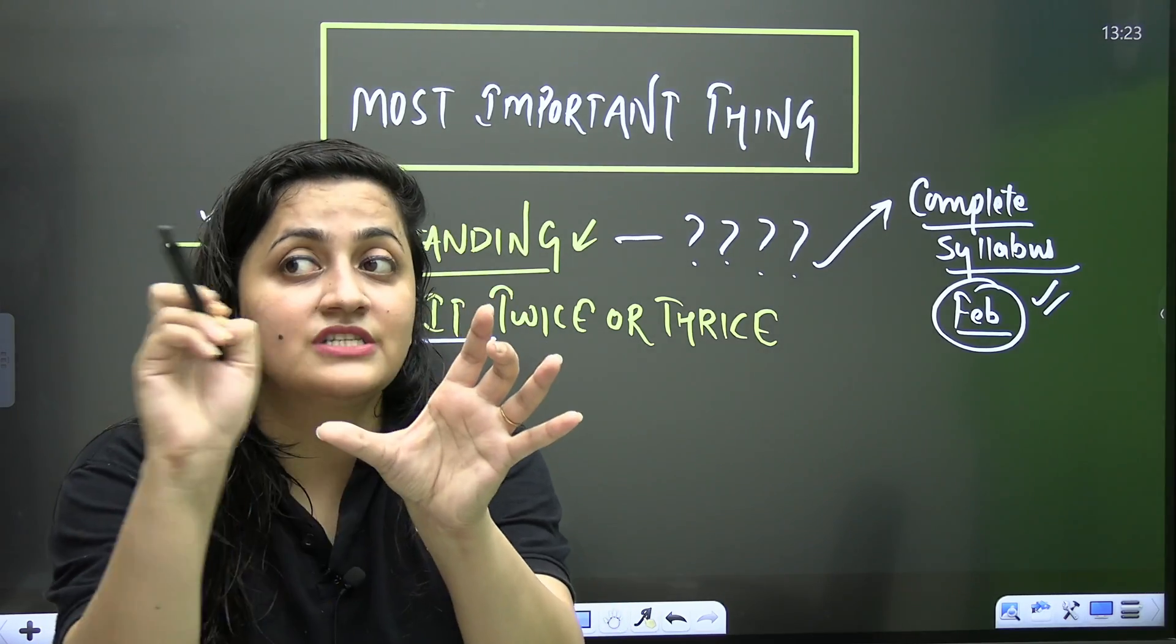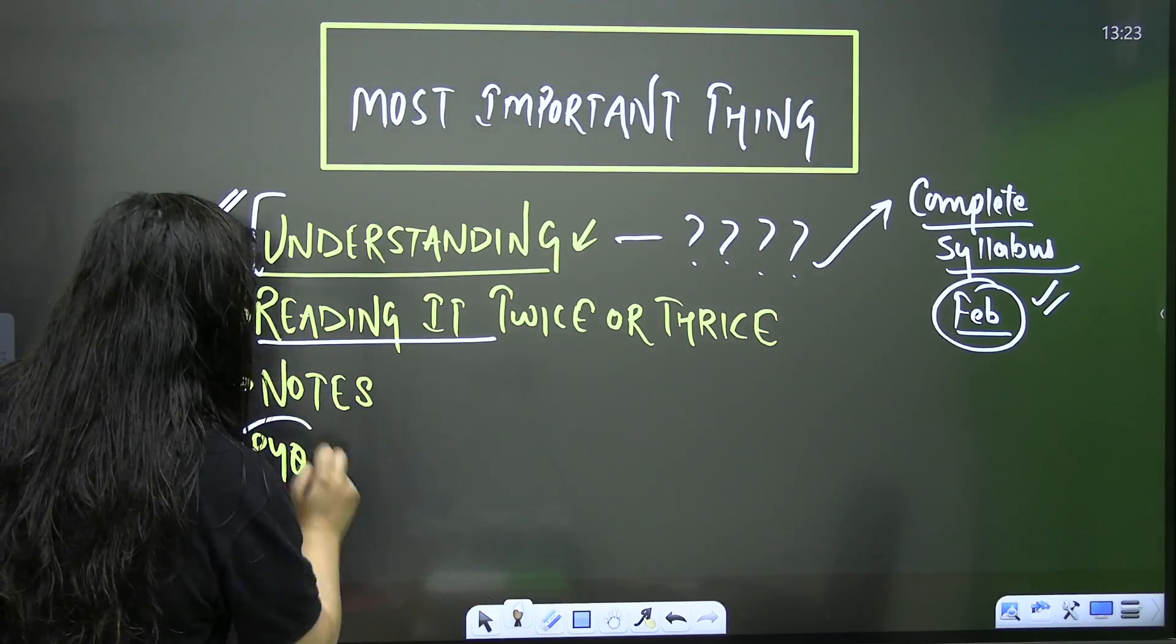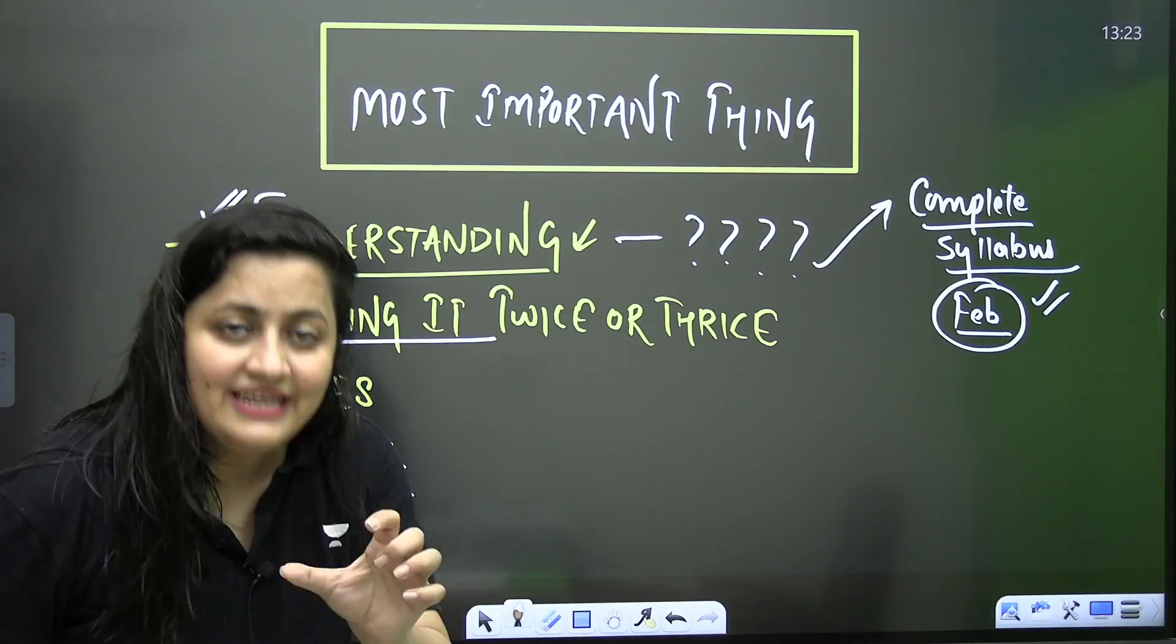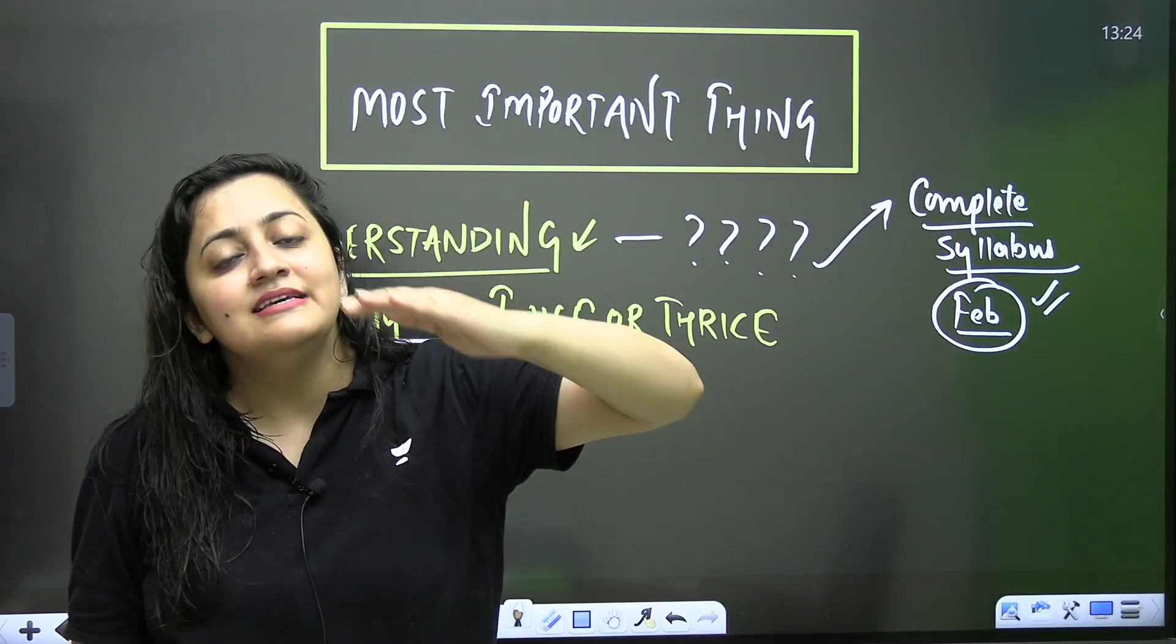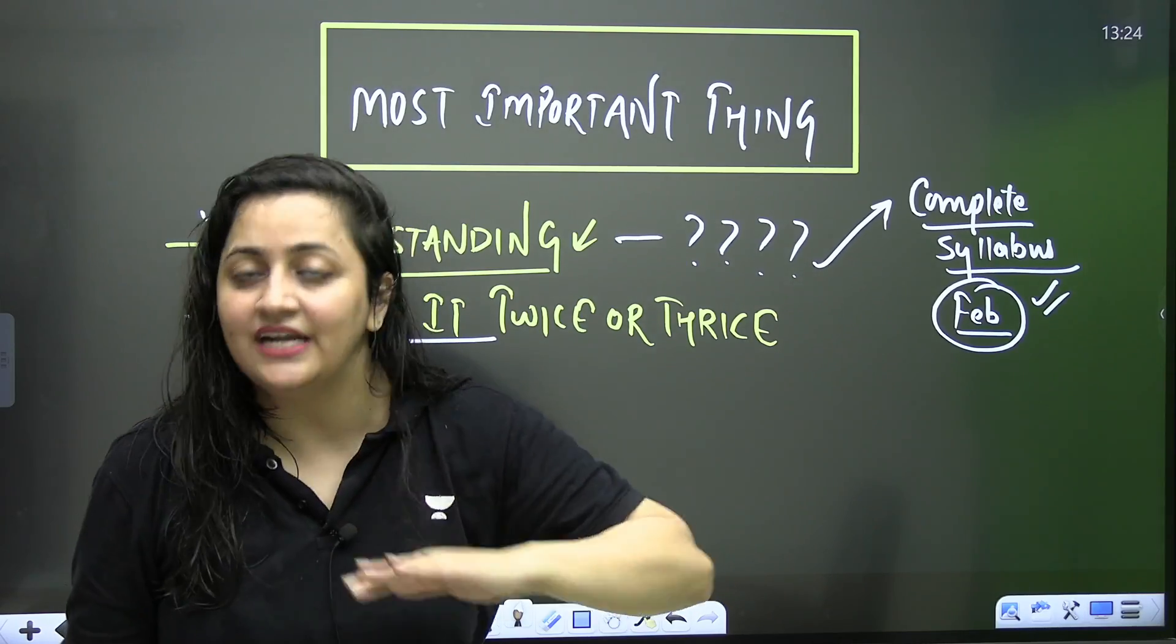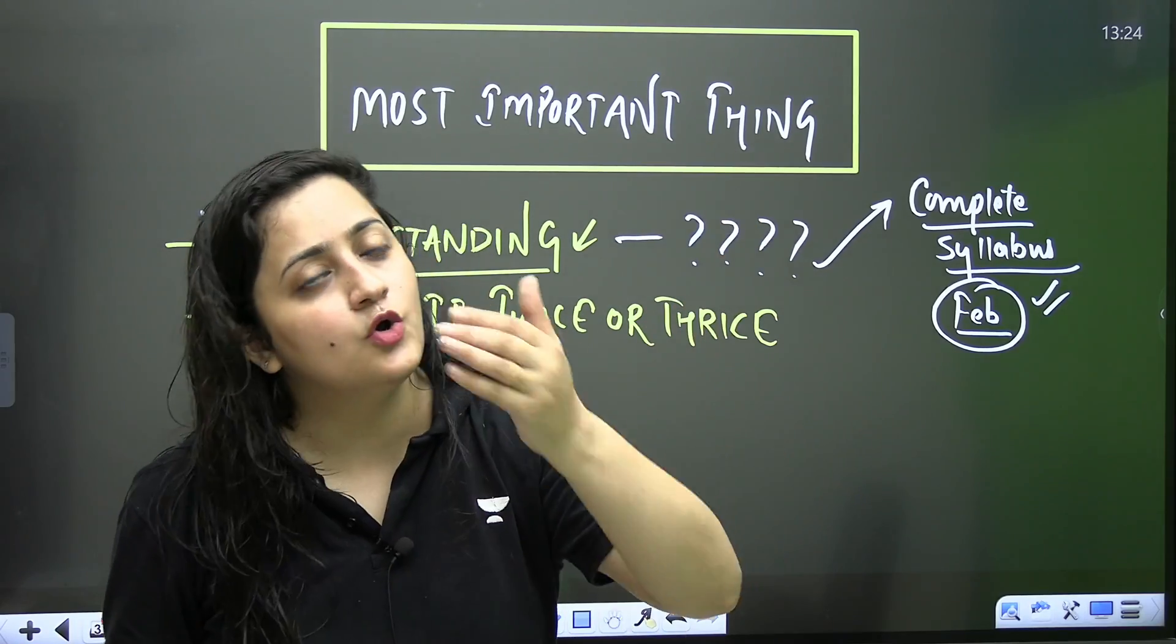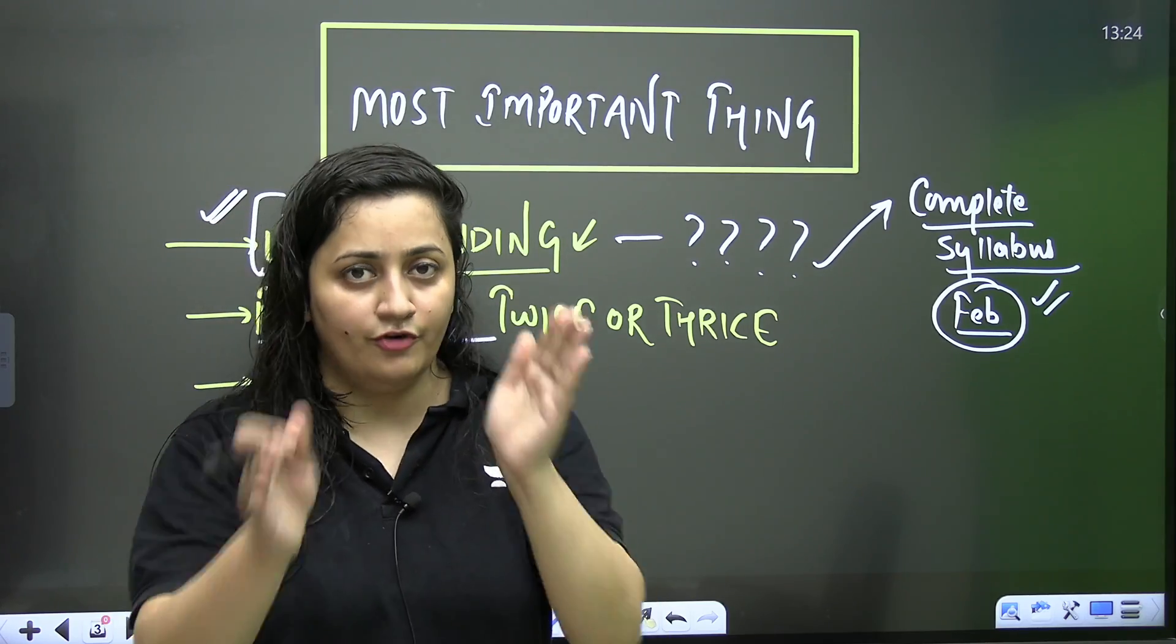And then you need to start highlighting the important points. But how will you get to know that these are the important points? By practicing PYQs as much as you can. You really need to buy a book in which you are getting NCRT-based questions. If you are not having any book in which questions are given on the basis of NCRT, go get and buy it. That is important for you.